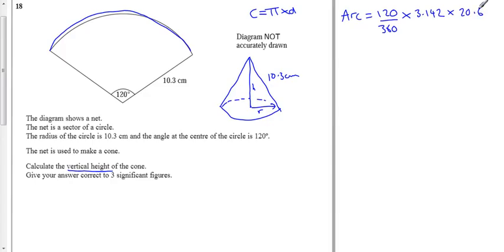So let's do that. 20.6 times 3.142 times 120 divided by 360, or we could just do it as a third. We get the arc is equal to 21.575066667 cm.